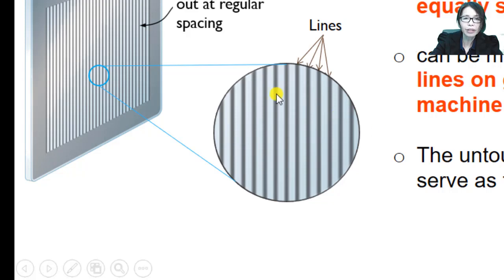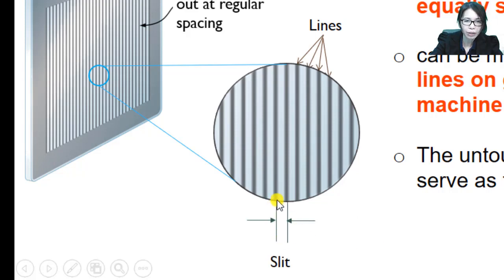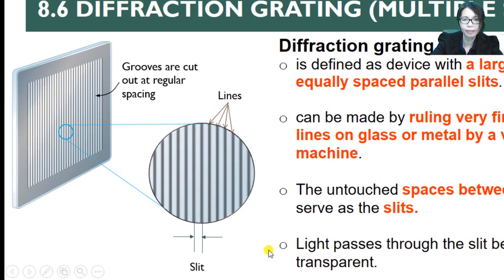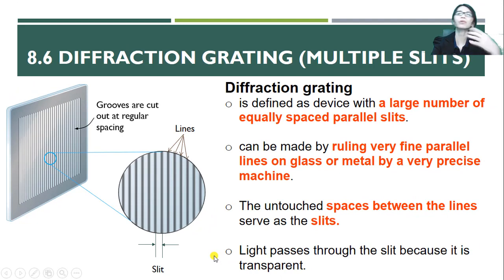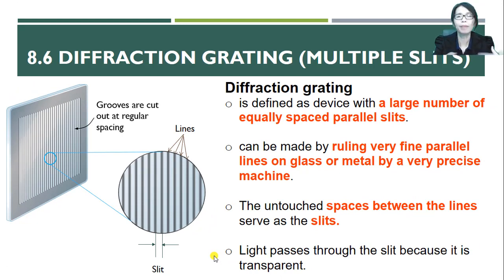The untouched space between the lines will serve as the slits. The untouched spacing between two lines serves as a slit, and light will pass through the slit because the grating is transparent.